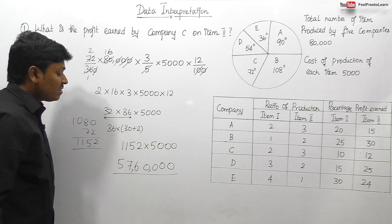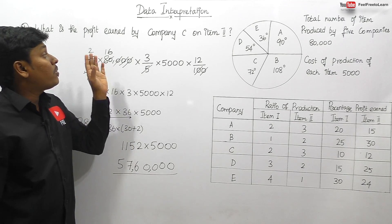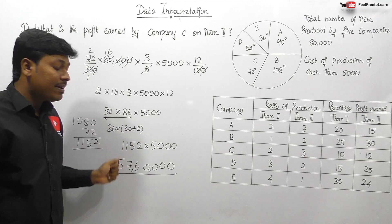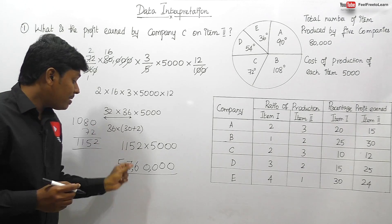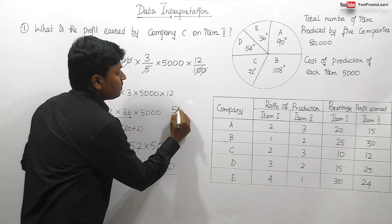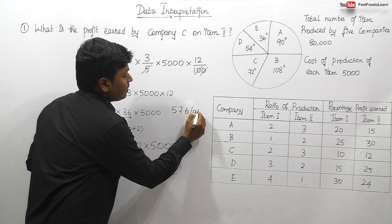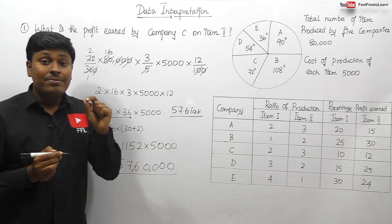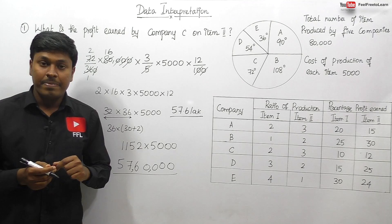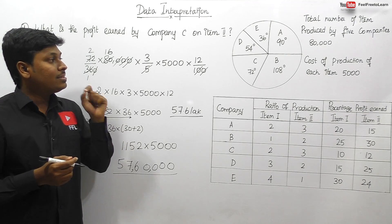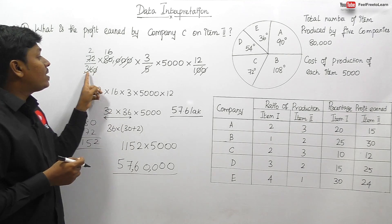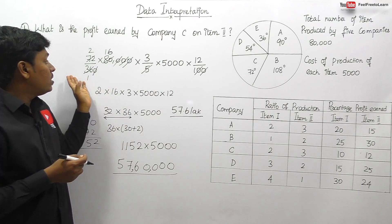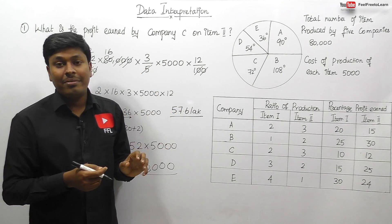Finally, the profit earned by company C on item number 2 is 57,60,000, which can be written as 57.6 lakh. The most important technique in this DI is writing all values in a single step — if you know this concept, solving all questions based on this DI becomes very simple.